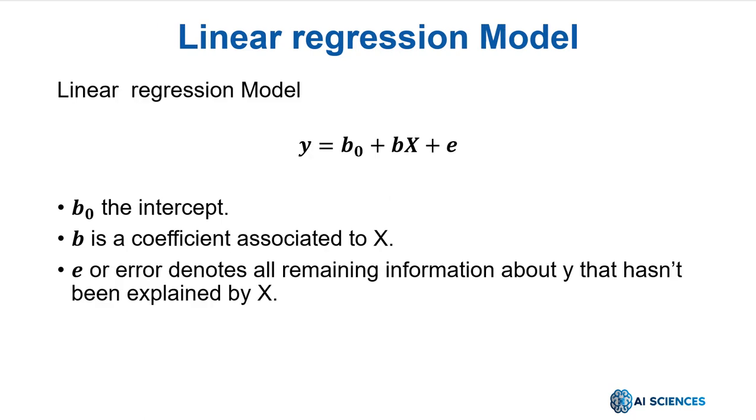Let's write this model as an equation. It goes like this: y equals b0 plus bx plus e. b0 is the value of y even if the value of x is 0. It's called the intercept. b is a coefficient associated to x. It will be a vector of coefficients. e, for error, denotes all remaining information about y that hasn't been explained by the x variables. Of course, the linear model is not perfect and it will not predict all the data accurately.